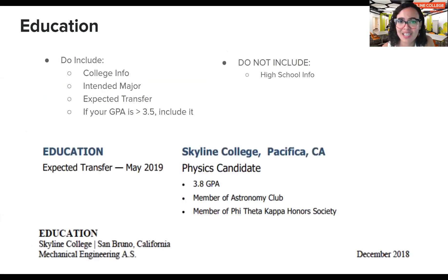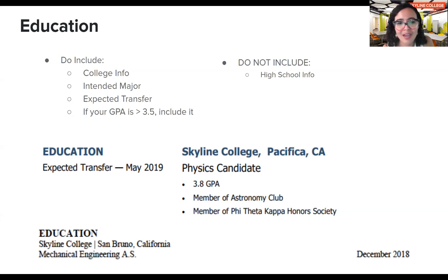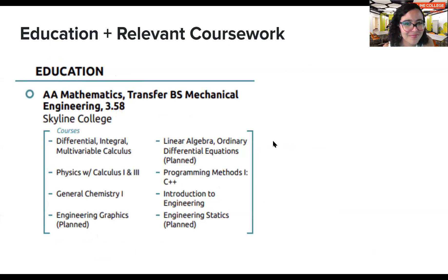For the education section, include your college info, intended major, and expected transfer date. Include your GPA if it's above 3.5. No need to include your high school info. Looking at this sample education section, you can see they listed their expected transfer, GPA, and clubs at Skyline, noting they're a physics candidate. For relevant coursework — like this mechanical engineering student — list the courses you've taken, and in parentheses mark any you plan to take as 'planned.'